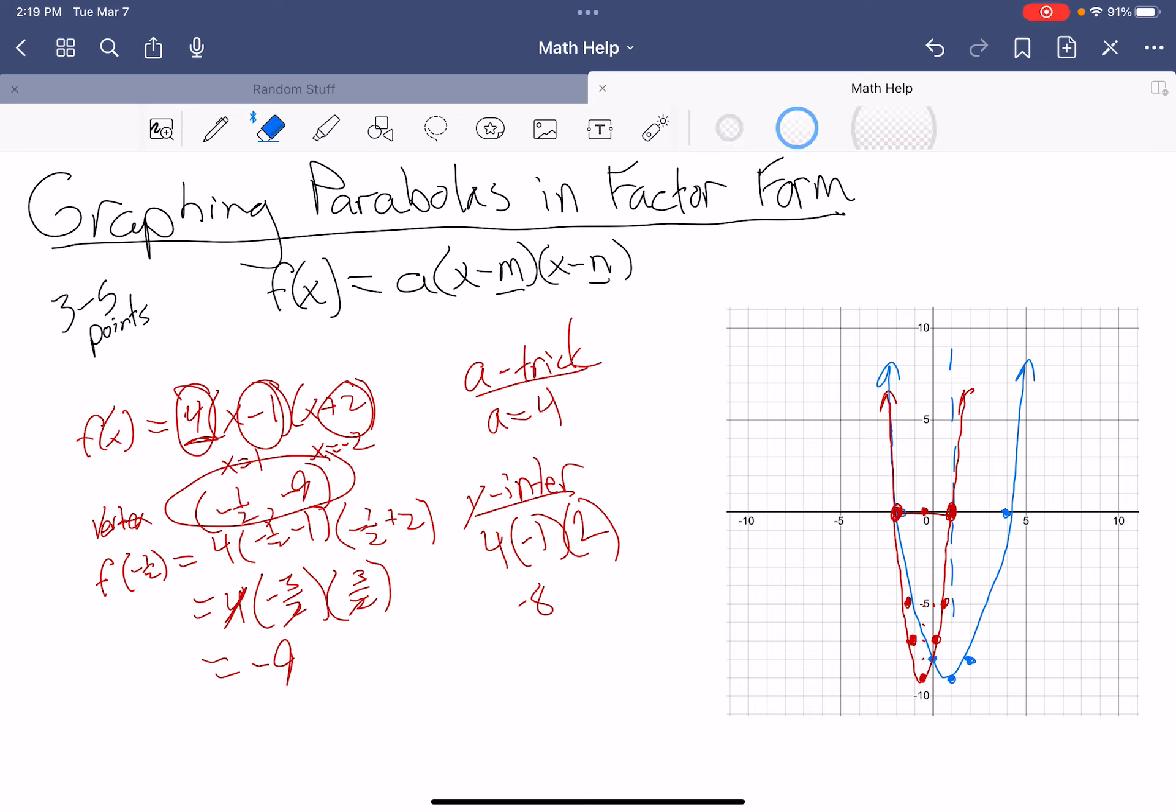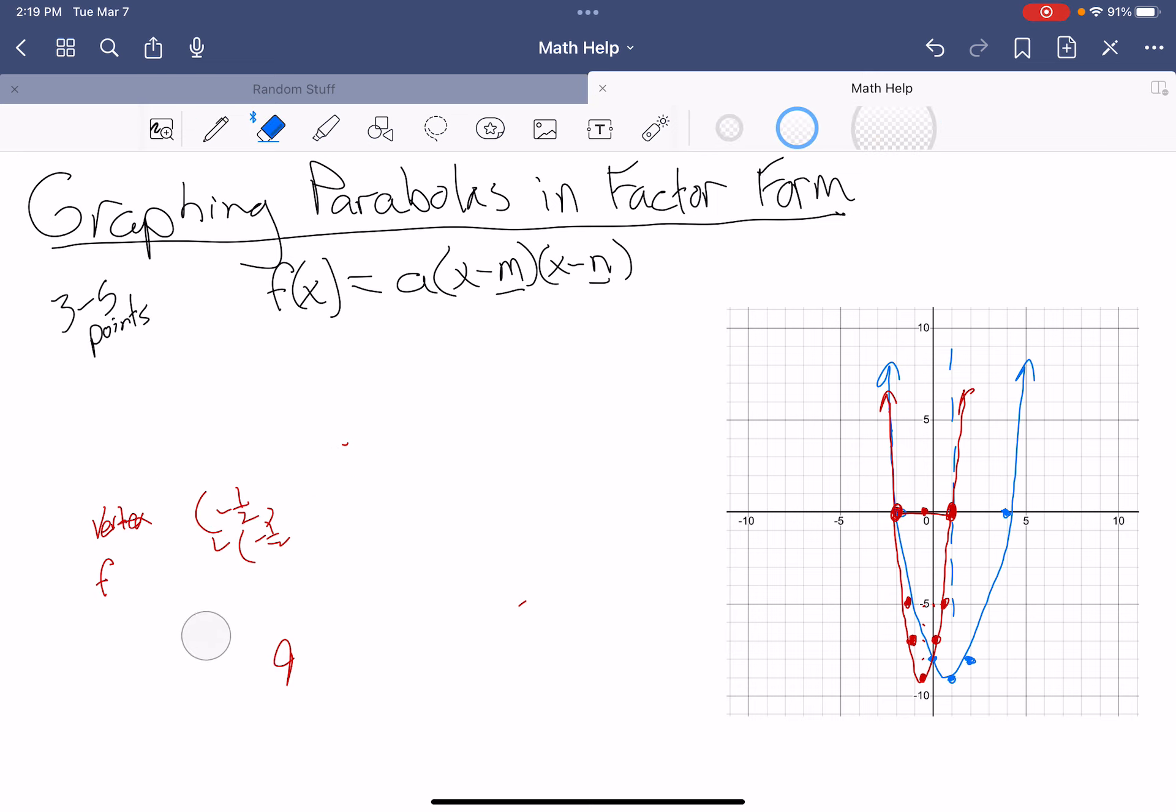Let's do one final example and make it with a being negative. Let's go to green. This time we're going to do a variation of the one we just did here. f of x is equal to negative 2 times the quantity x minus 1 then x plus 2. Again, I'm going to have the same intercepts at x equals 1, x equals negative 2. I have the same sort of axis of symmetry right here. So I know that my vertex is going to be at negative 1 half.